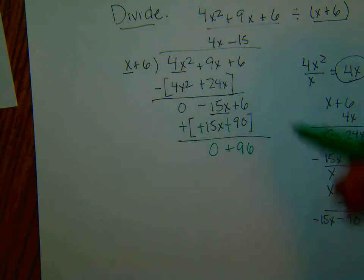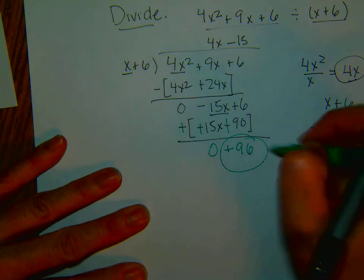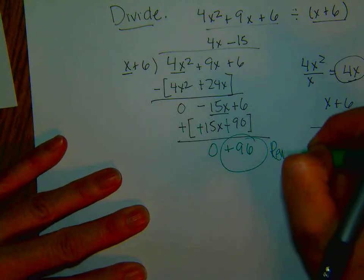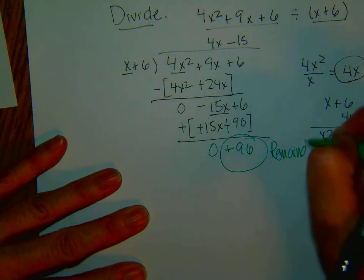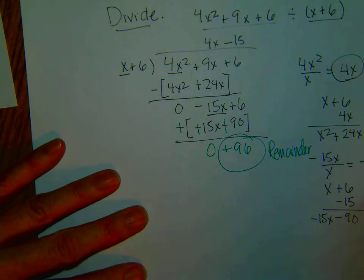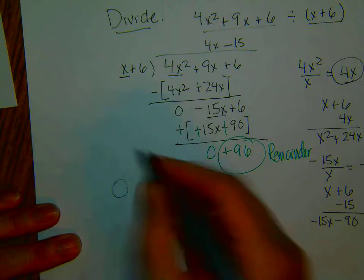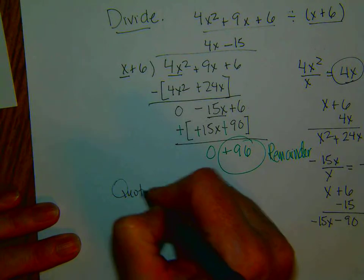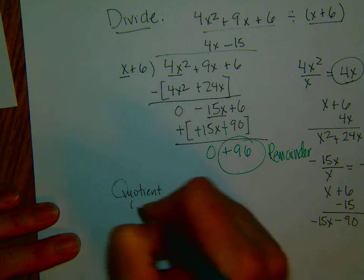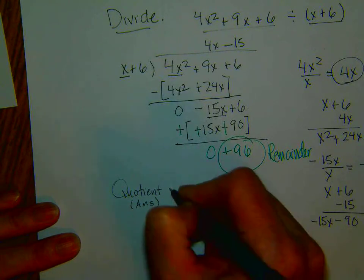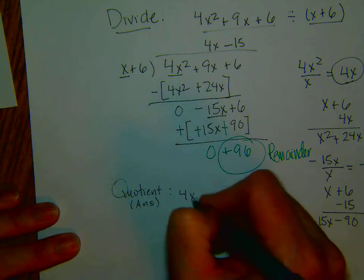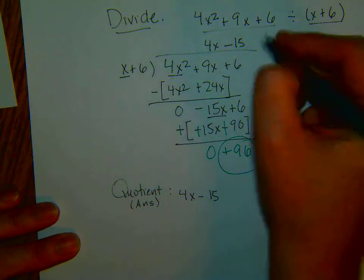And then the next step would be to bring down. There is nothing left to bring down, so this is our remainder. So just to review, what is the quotient or the answer? The quotient or the answer is 4x minus 15.